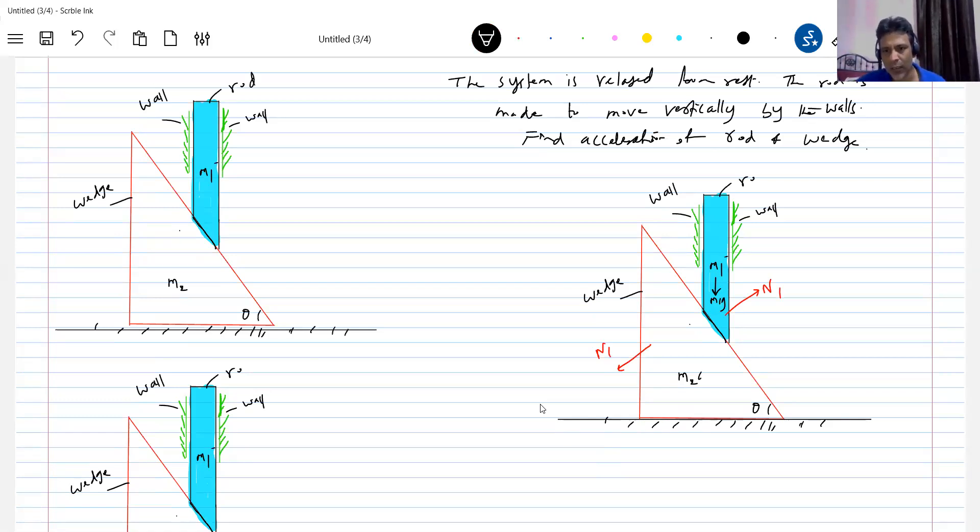Then what are the other forces? Weight M2G, normal contact N2. Tell me in what action the wedge will move. The acceleration of the wedge will be like this. In what possible? The rod must move vertically down. A1 acceleration of the block, acceleration of the rod. A2 is acceleration of the wedge.